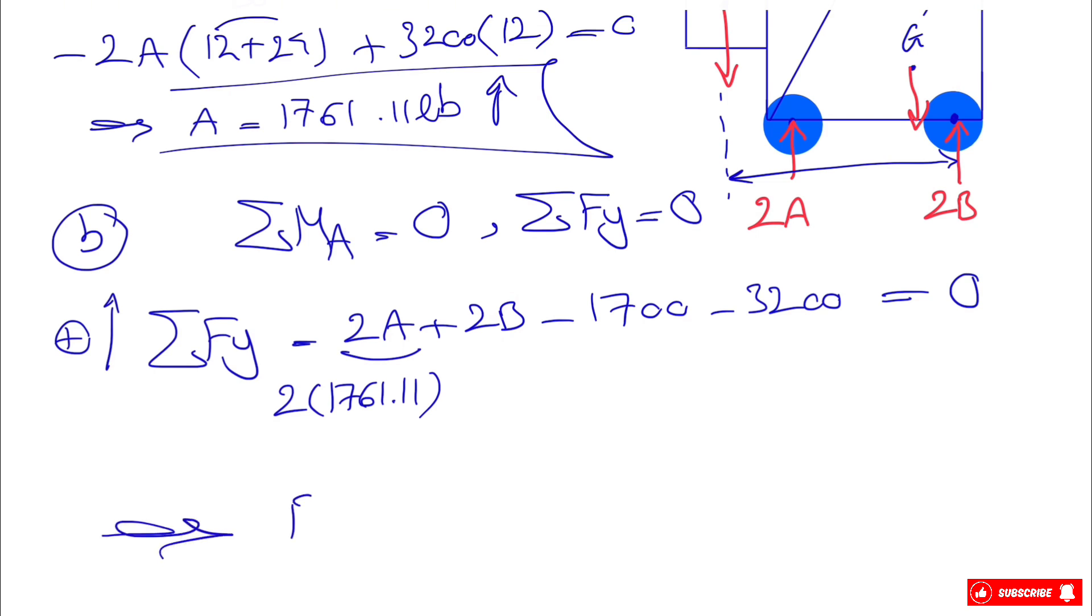And from here we can find the unknown B, which will be 688.89, and the direction will be upward. Again, no negative sign. That shows the assumption that we have at the first place for B was correct, and all the reactions are upward.